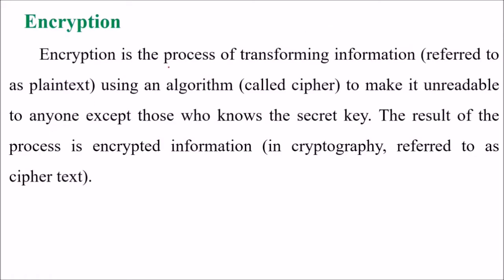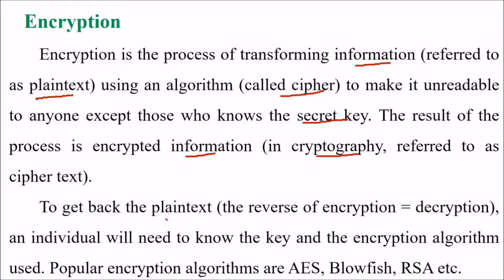Encryption is the process of transforming information — called plaintext — using an algorithm called a cipher, to make it unreadable to anyone except those who are aware of the secret key. The result of the process is encrypted information, which in cryptography we call ciphertext. To get back to the plaintext — the reverse of encryption — we call it decryption, and an individual will need to know the key and the encryption algorithm used. Popular encryption algorithms include AES, previously DES, Blowfish, and RSA.